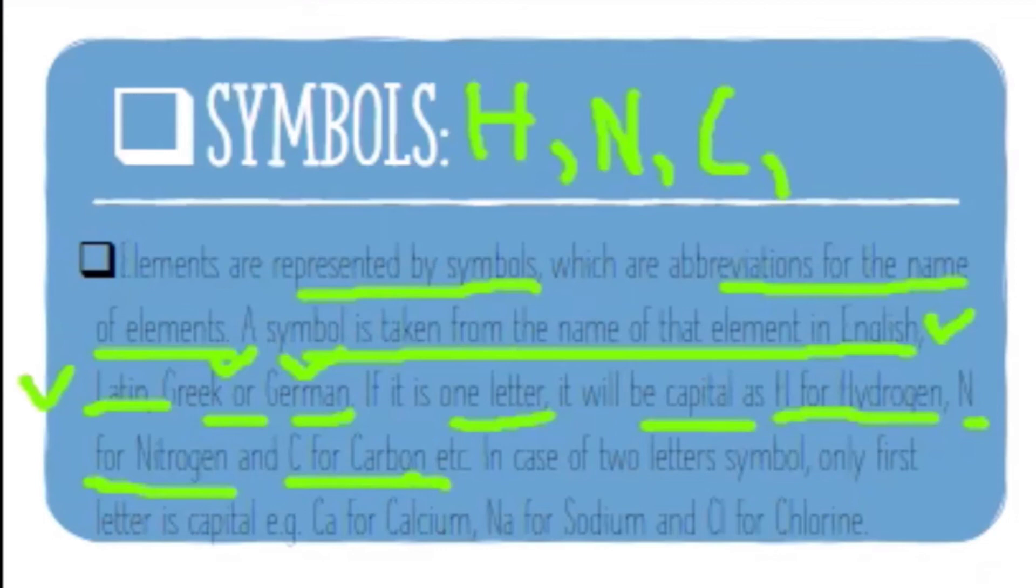In case of two-letter symbols, if the symbol of an element has two letters, the first letter will be capital and the second letter will be small. For example, Ca for calcium—C and A are two letters, so the first letter is capital and the second is small. Sodium is Na—two letters, so the first letter capital N, and the second letter small a.